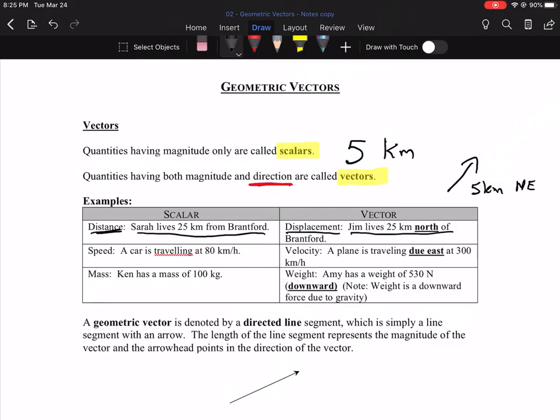Another scalar: speed. A car is traveling 80 kilometers an hour. Just the number will do. That's a scalar. But if you switch to velocity and say a plane is traveling due east at 300 kilometers an hour, now we're talking about a vector, because the important piece of information that's been added is the direction.